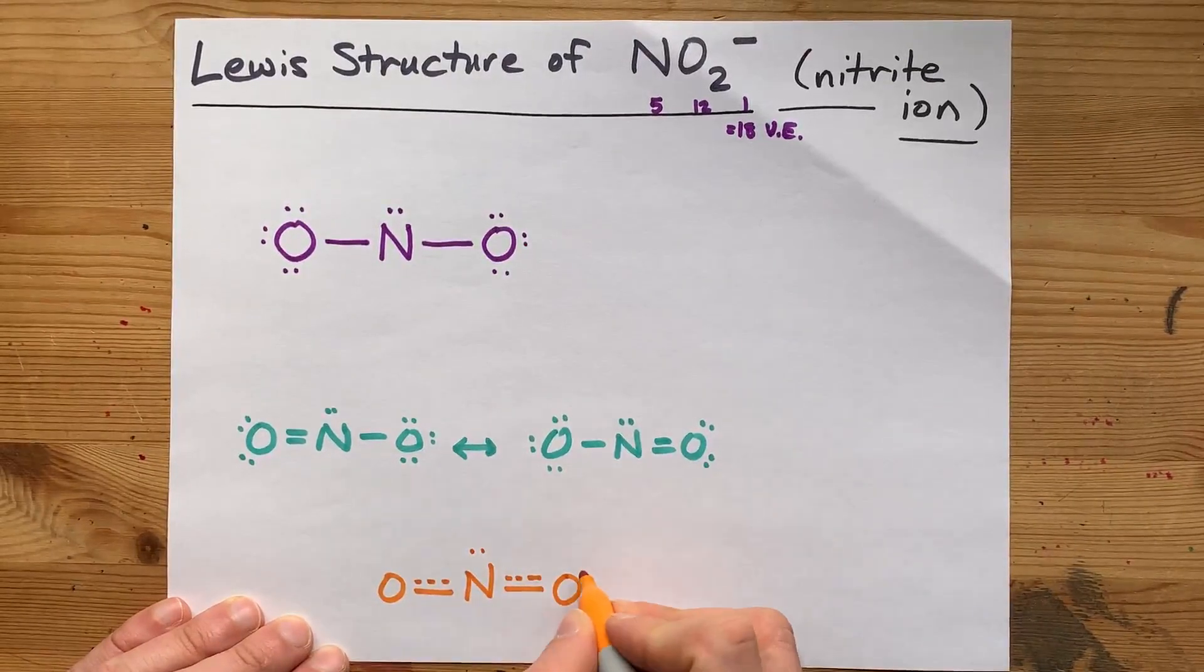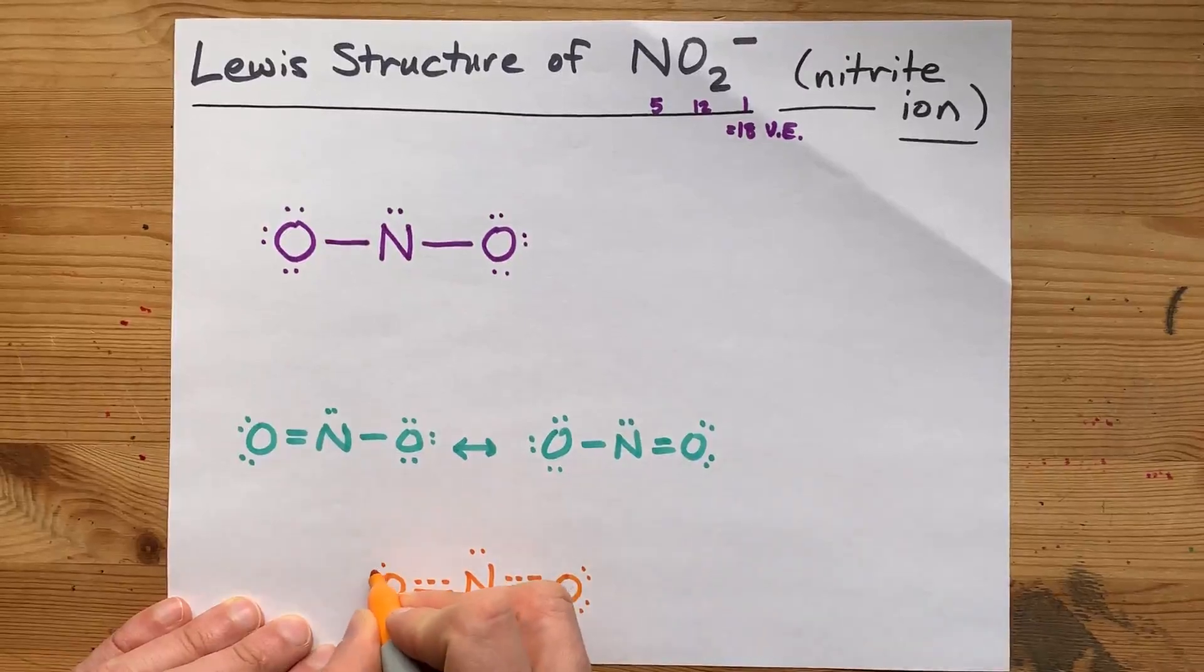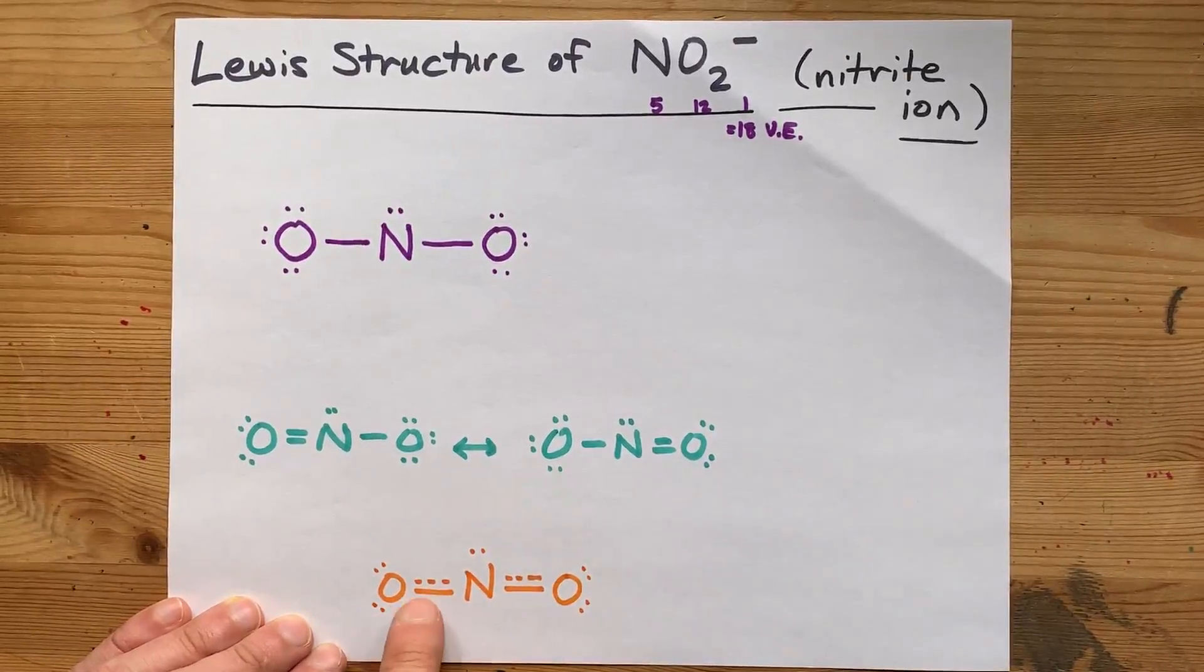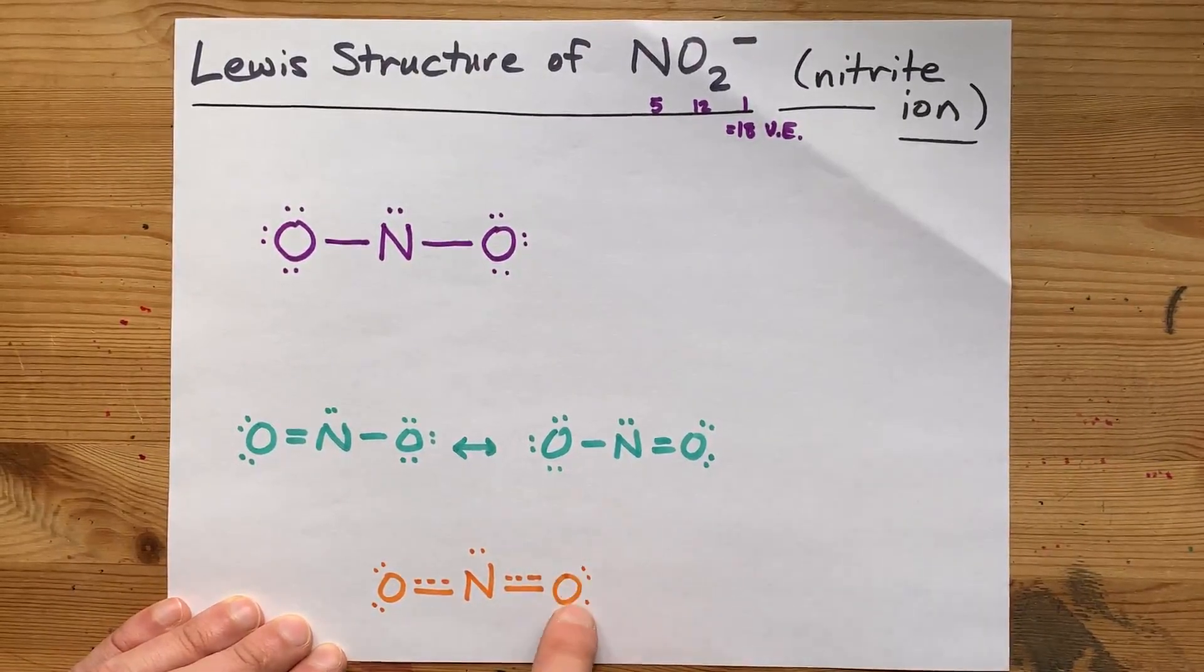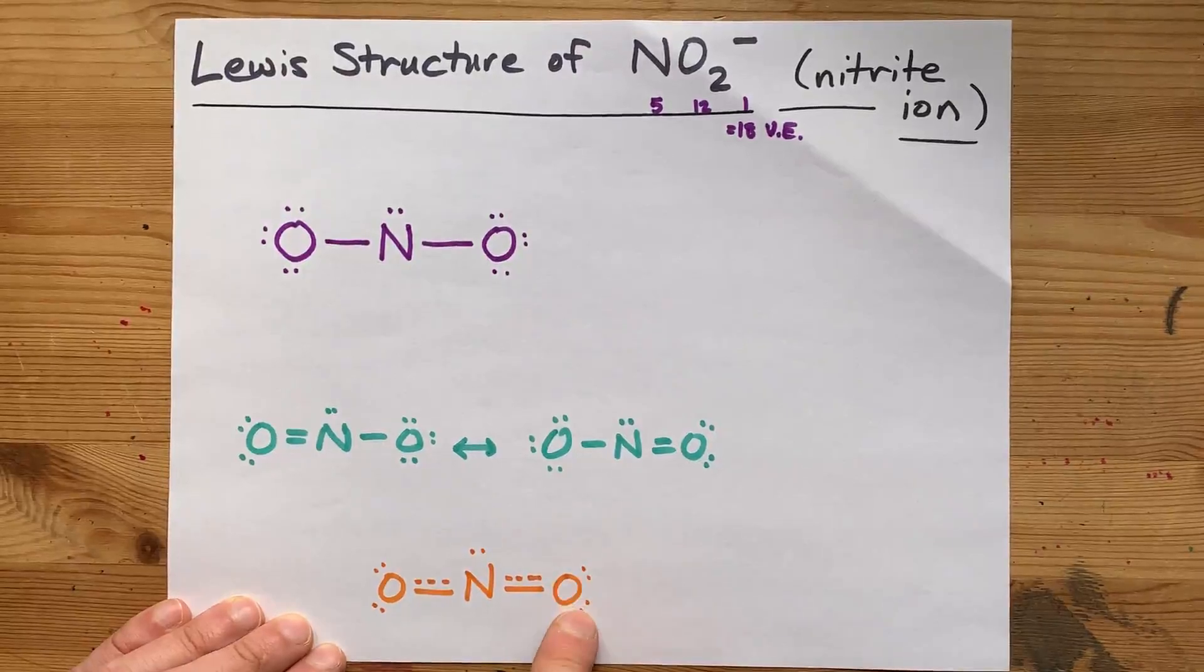Where do the extra electrons go at that point? Honestly, it's kind of up to you. I like drawing my oxygens with two doubles, like two pairs of lone pairs.